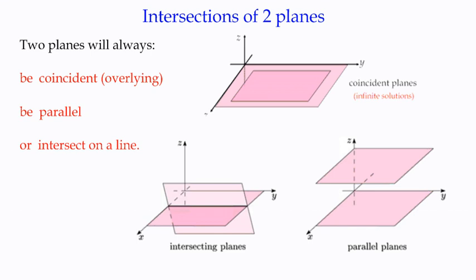What we're going to look at here is the intersection of two planes and what that means for the actual intersection points. When you get two planes, it's very straightforward. There are three situations.